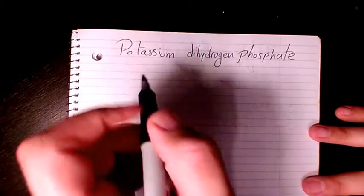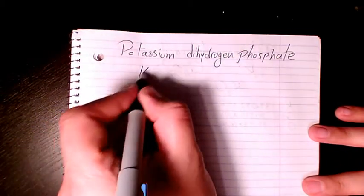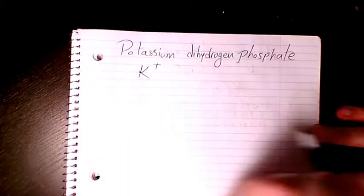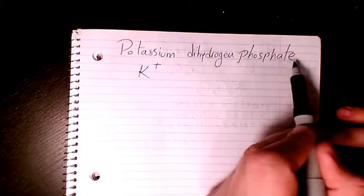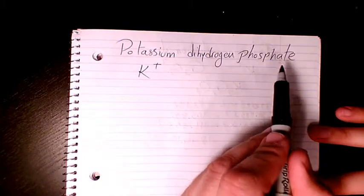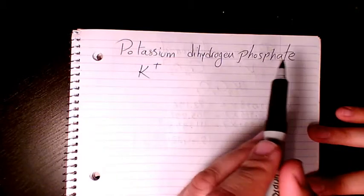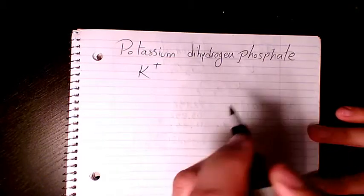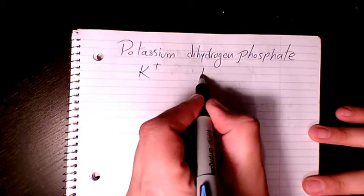So first of all, I write the cation part. We have potassium which is K, belongs to group one, so it's K+. And the second part we have dihydrogen phosphate. Dihydrogen phosphate is the polyatomic ion which is written as H2PO4.